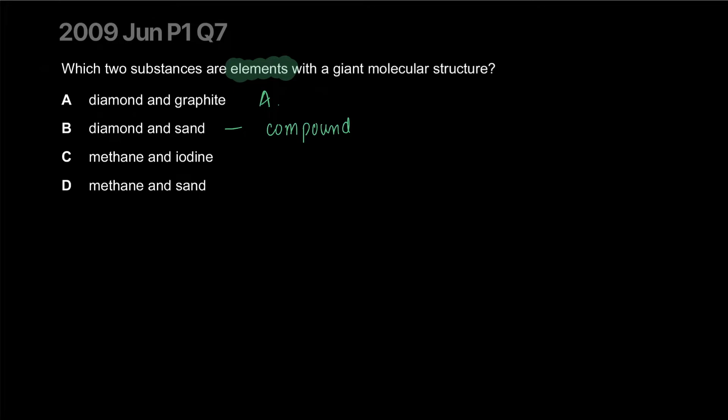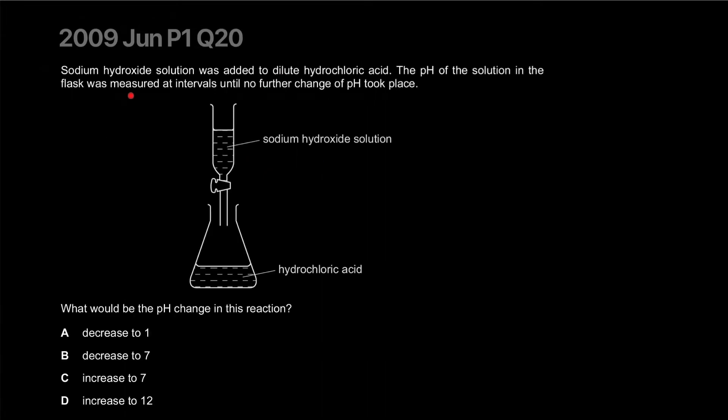You have methane, which is not a giant covalent structure and not an element, and iodine, which is not a giant covalent structure but is an element. Methane and sand - we've done methane, we've done sand. Correct answer is A.